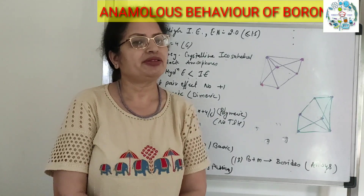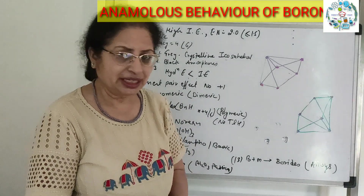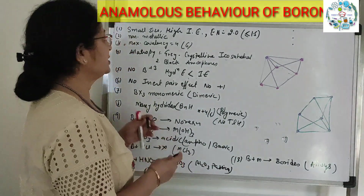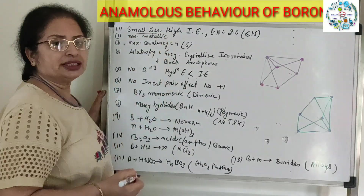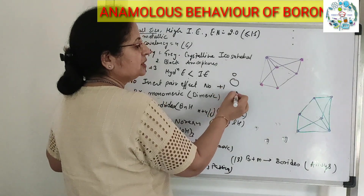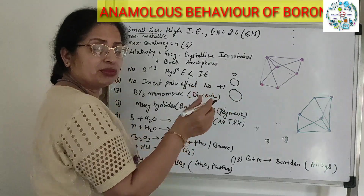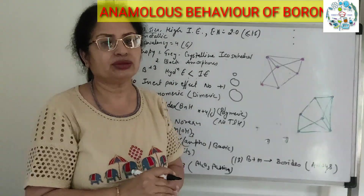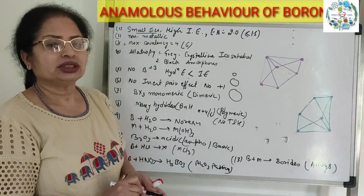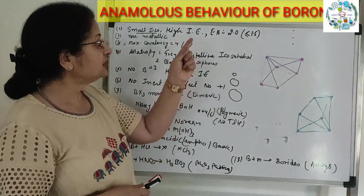Today we are going to discuss the anomalous behavior of boron. Boron, which is in our group, is not the same as the other elements — it is different. Boron has the smallest size in the group. We know that top to bottom, size increases, but boron's size is extraordinarily small because it has no d-orbitals. This is why its size is extraordinarily small.